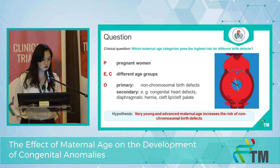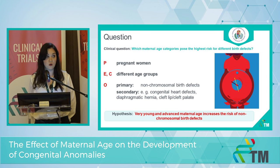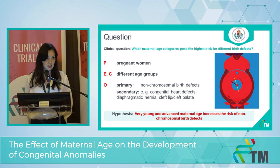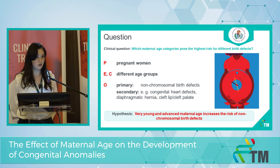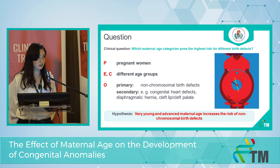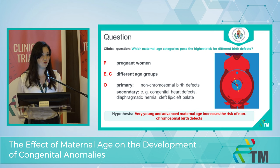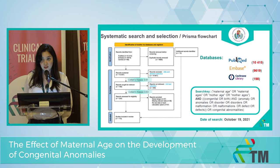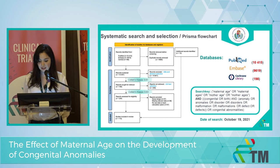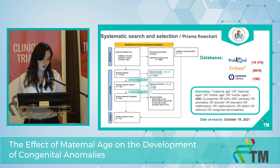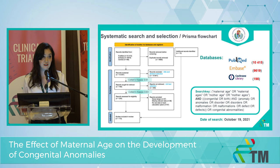We compare different age groups, and our primary outcome is non-chromosomal birth defects together, while our secondary outcomes are individual congenital abnormalities grouped by ICD-10 categories. Our hypothesis is that both young and advanced maternal age increases the risk of non-chromosomal birth defects. We carried out a systematic search in October across three comprehensive databases, and at the end of the selection period, we obtained more than 100 articles for mathematical synthesis.